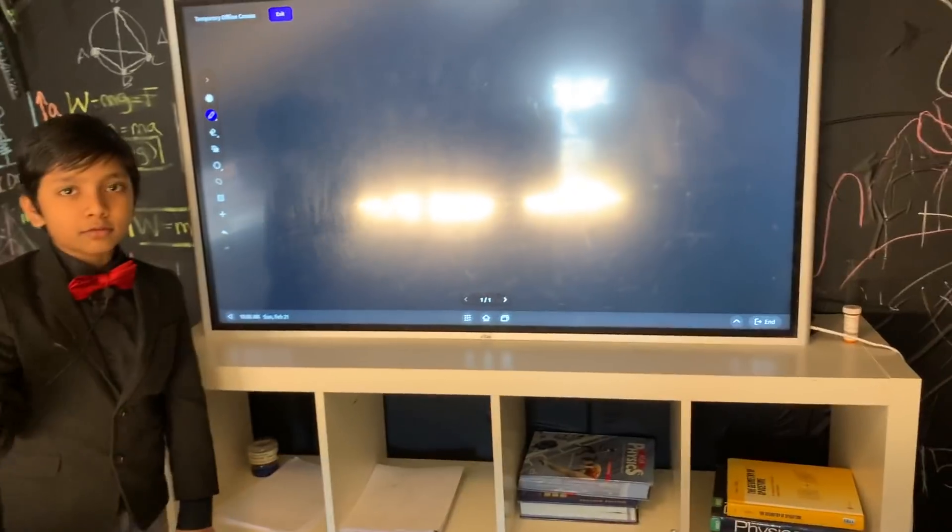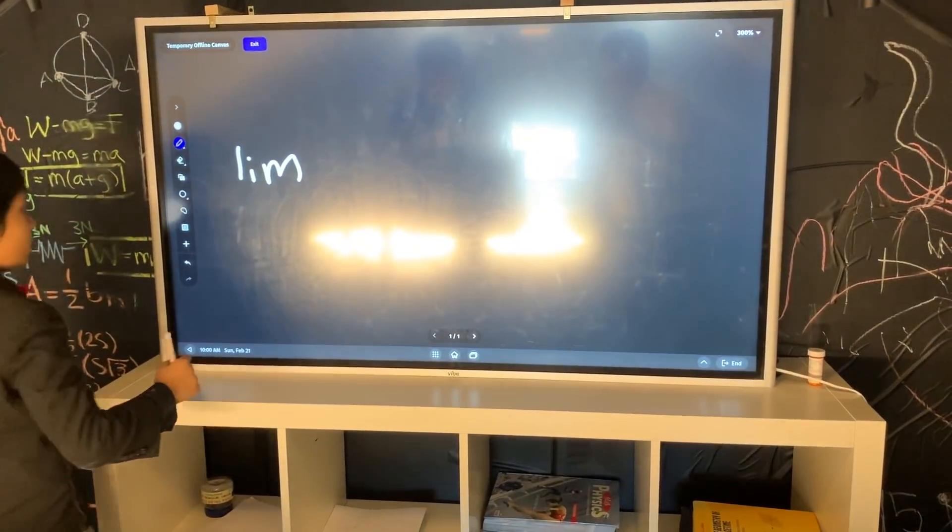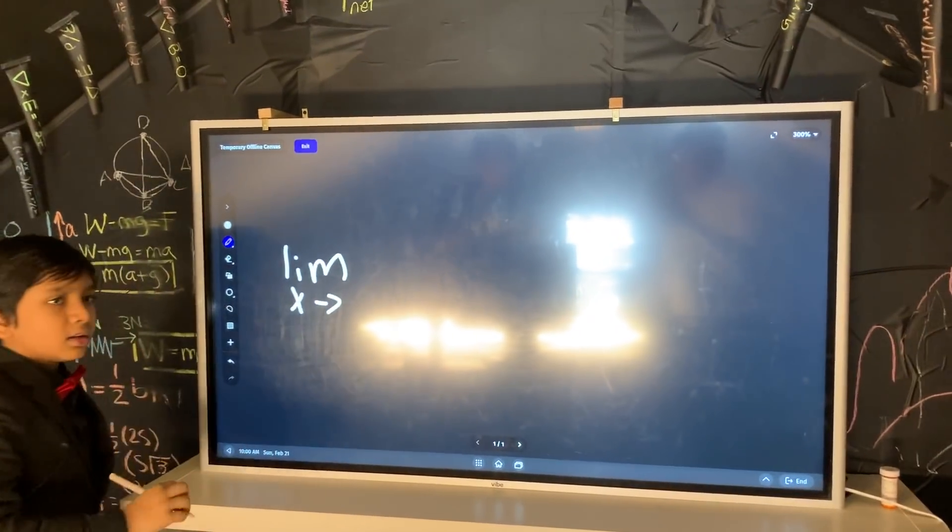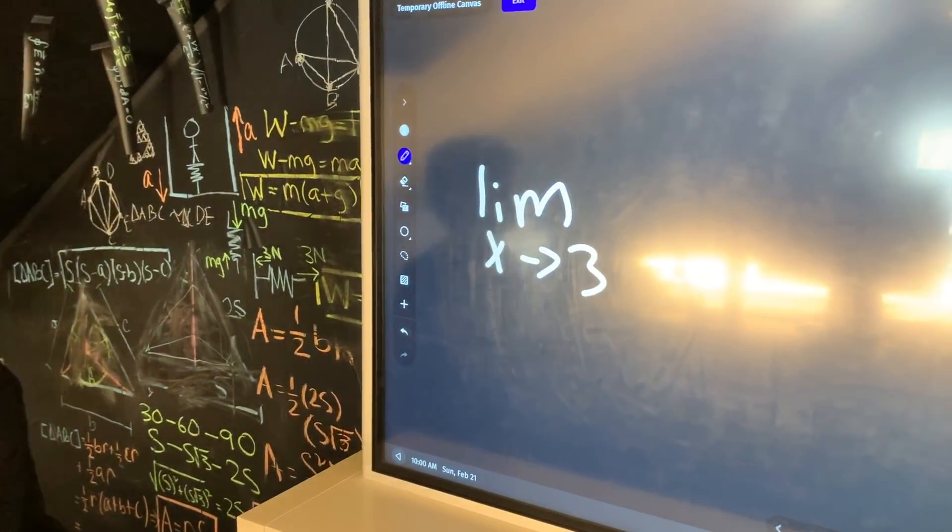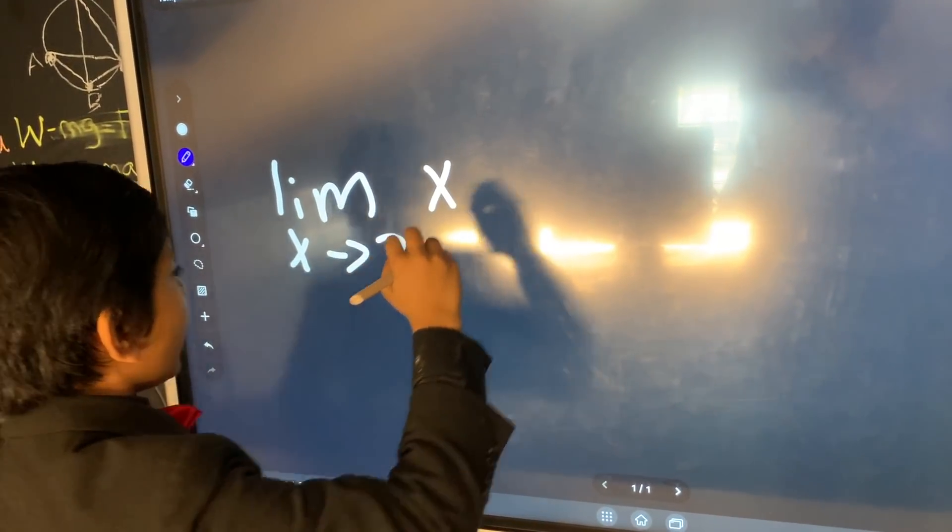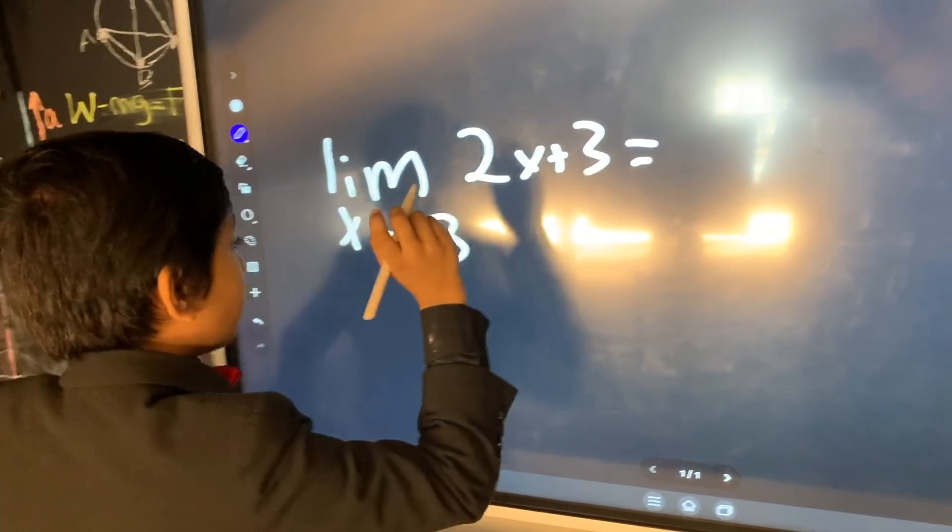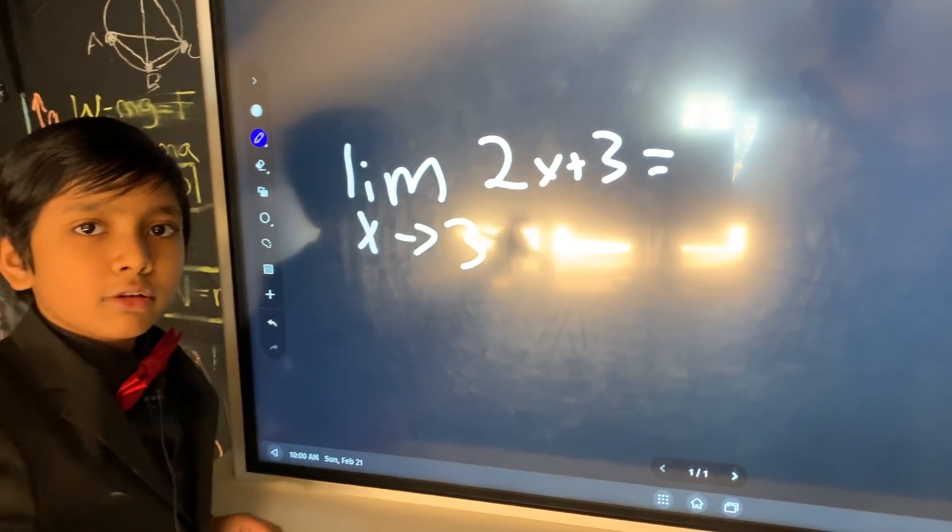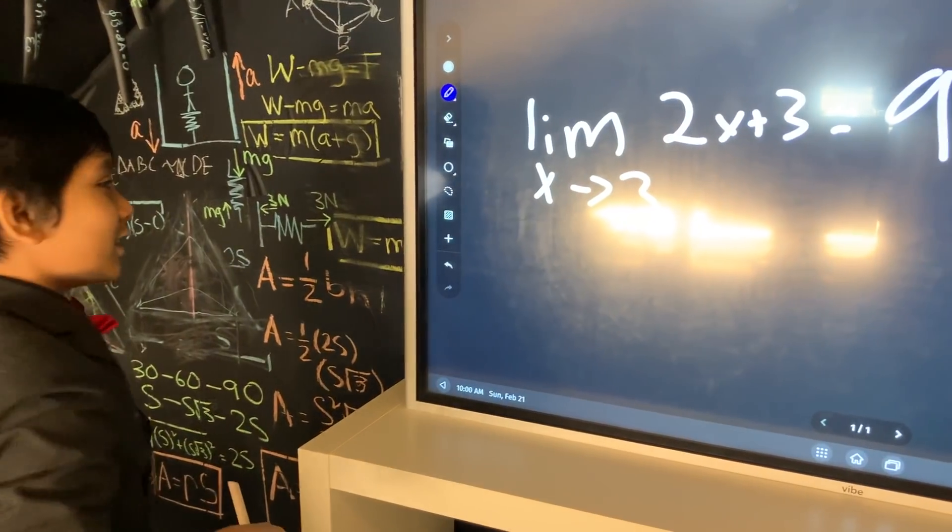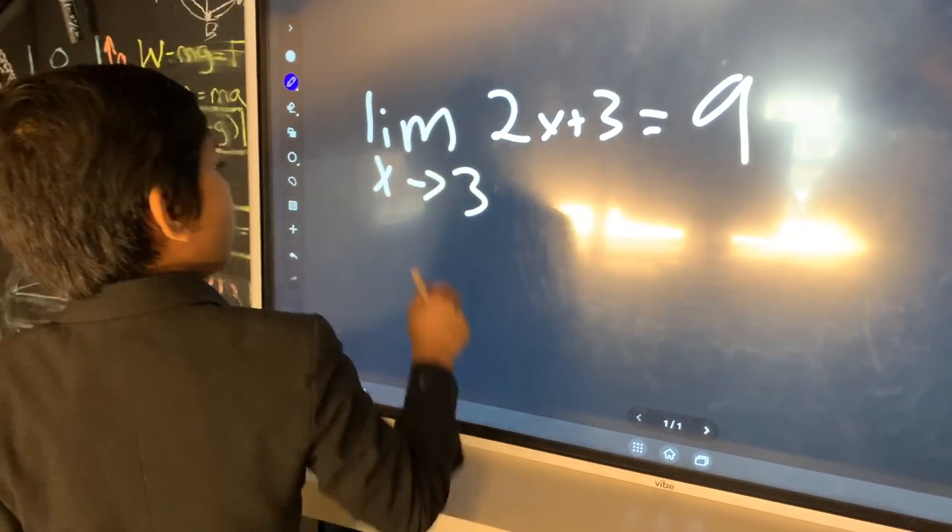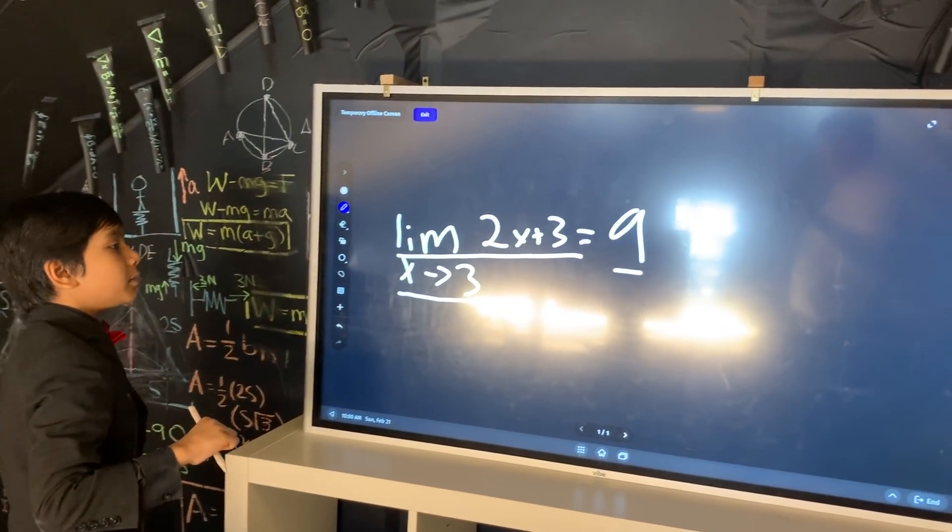So, we can write it this way. This is basically how limits work. The limit, as x approaches 3, the limit of y, as x approaches 3, of x, of 2x, plus 3, is equal to, remember, 3, plug in, 2 times 3 plus 3 is 6 plus 3 equals 9. It kind of has a rhythm to it. So, that means the limit of 2x plus 3, as x approaches 3, is 9. That's how limits work.